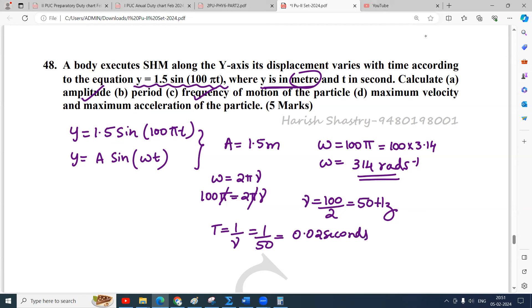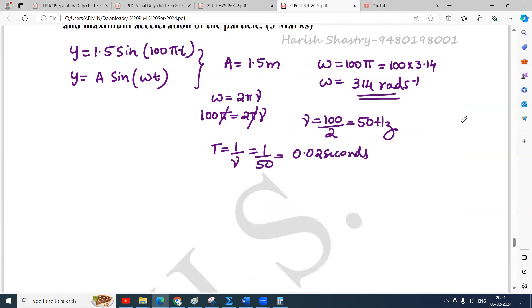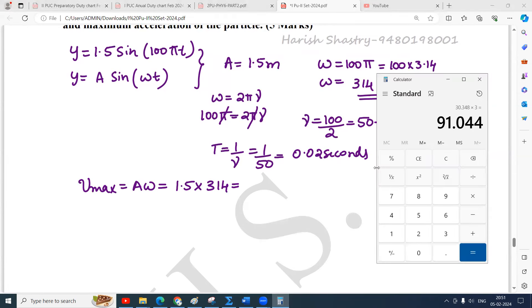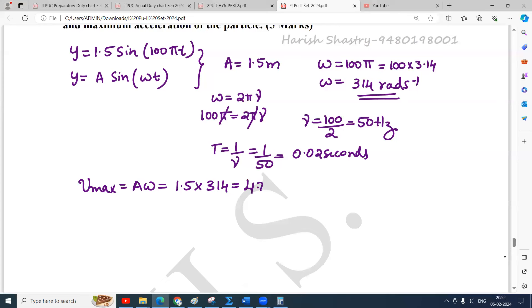Then maximum velocity of the particle. V maximum equals A omega. Amplitude is 1.5 and omega is 314. That equals 314 into 1.5, which equals 471 meters per second.